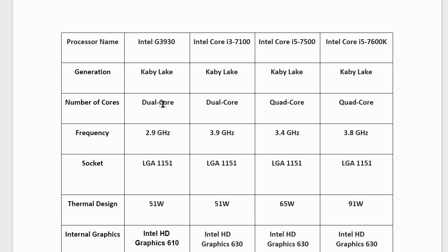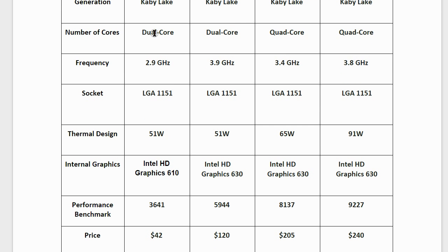The number of cores refers to the number of physical processors built into each unit. In terms of frequency: the Celeron runs at 2.9 GHz, the Core i3 at 3.9 GHz, the i5-7500 at 3.4 GHz, and the Core i5-7600K at 3.8 GHz. All four use the Land Grid Array 1151 socket.